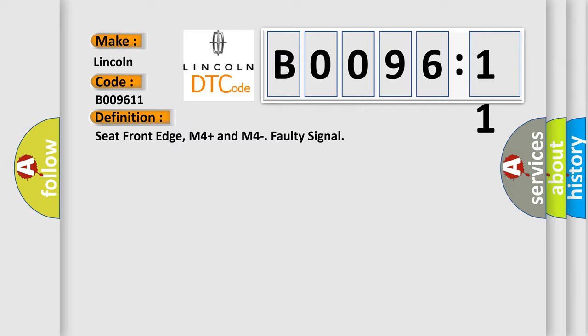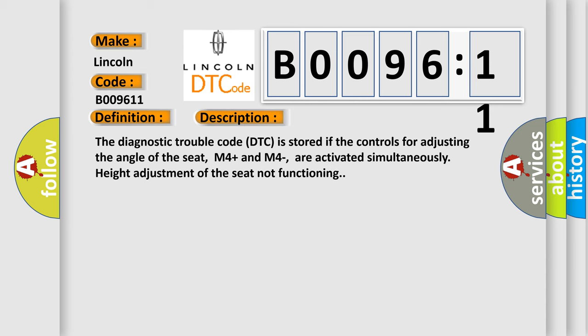And now this is a short description of this DTC code. The diagnostic trouble code DTC is stored if the controls for adjusting the angle of the seat, M4 plus and M4, are activated simultaneously. Height adjustment of the seat not functioning.